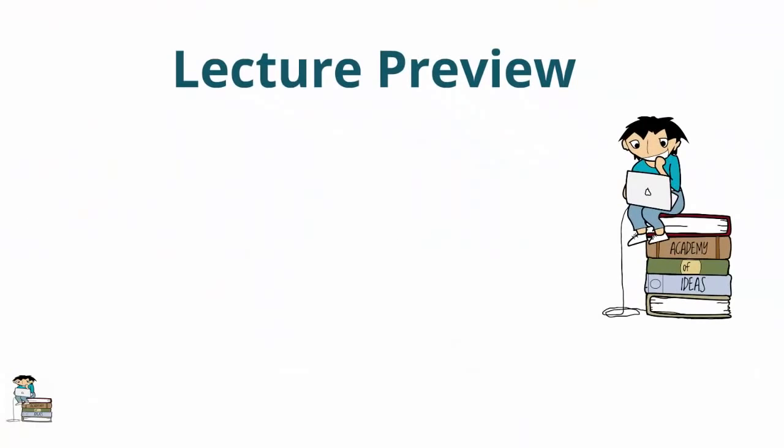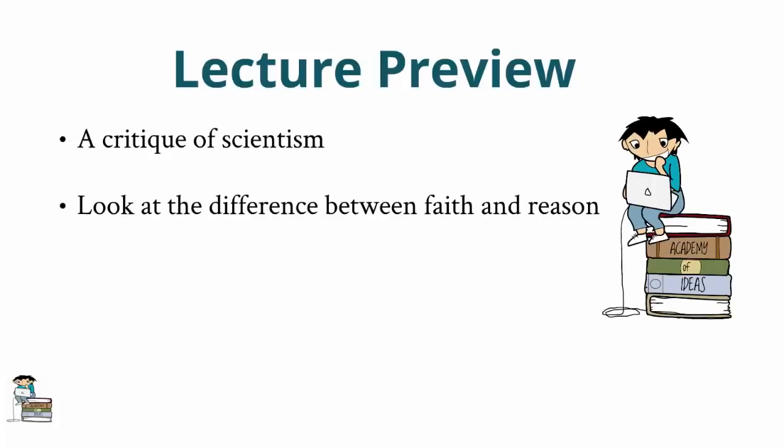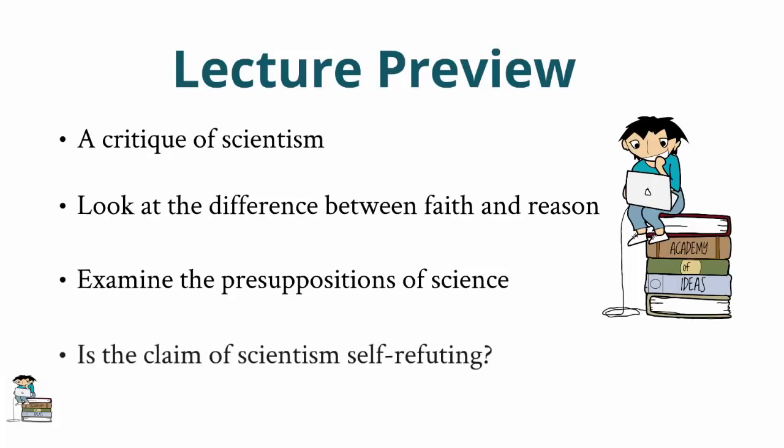In this lecture we are going to provide a critique of scientism. We will begin our critique by distinguishing between faith and reason and look at whether faith plays any role in the operation of science. We will then examine one of the presuppositions of science in an attempt to determine whether scientists themselves accept knowledge about the natural world from non-scientific sources. And finally, we will examine whether the claim made by proponents of scientism is actually self-refuting.